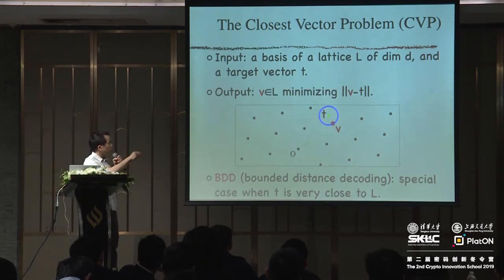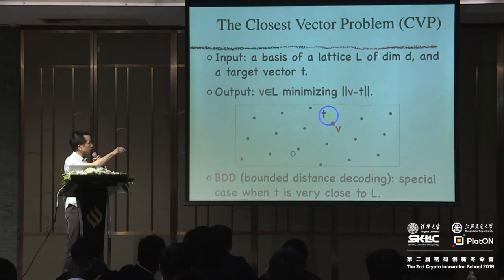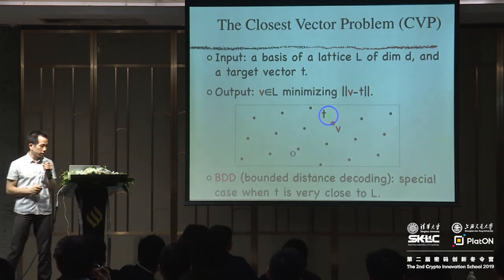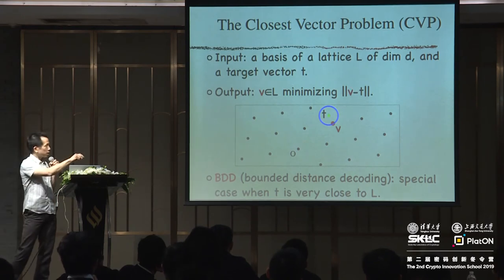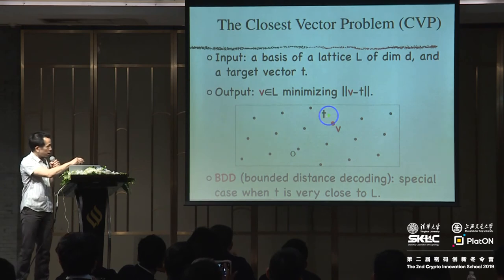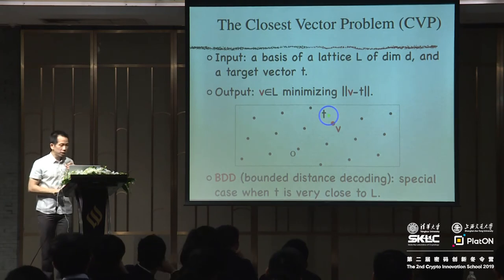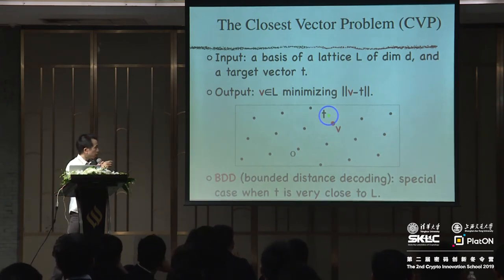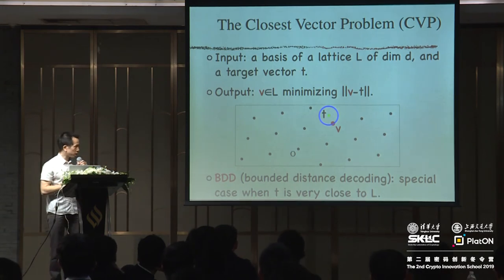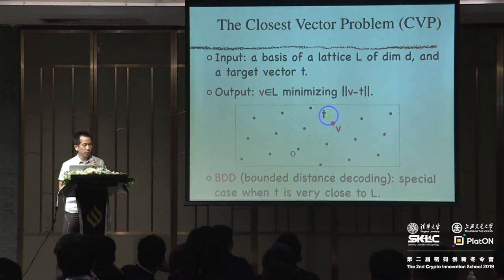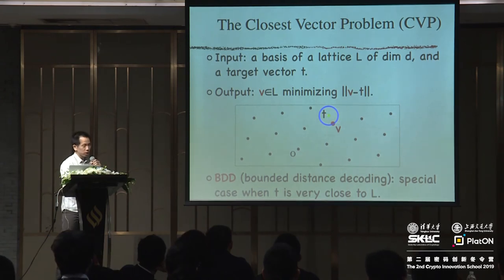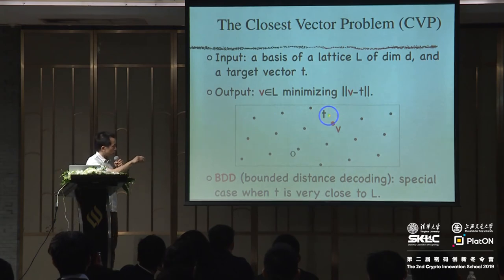There is a related problem called the closest vector problem. Besides a lattice, you're also given a target vector in the space, and your goal is to find a vector in the lattice minimizing the distance to the target. And you heard about bounded distance decoding, which is the analog of the coding problem where t is not any target — you choose t such that t is very close to the lattice. Typically you would start with a lattice point, add some small noise, and that's your target.